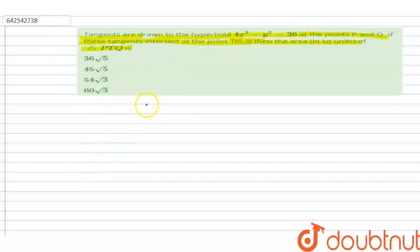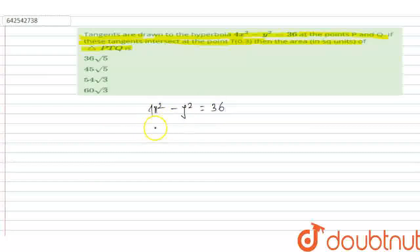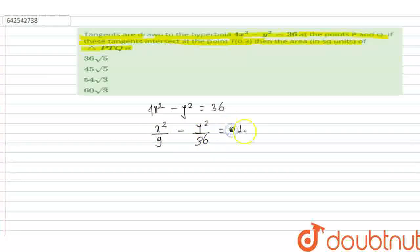The given equation of the hyperbola is 4x²-y²=36. When we write it in standard form, this becomes x²/9 - y²/36 = 1. This is the equation of the hyperbola.